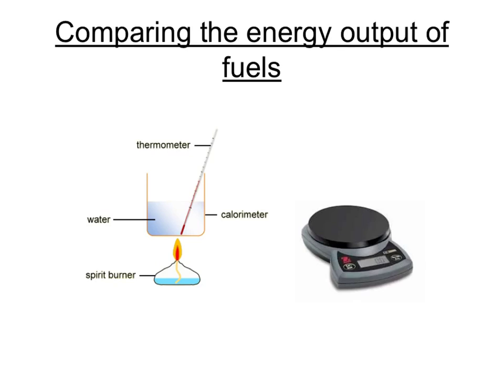You would measure the temperature of the water before and after the experiment. You would use a fixed volume or mass of water within the calorimeter and you would weigh the spirit burner before and after burning. By using the mass of the water, the temperature rise of the water, and the specific heat capacity of the water, you can work out the energy transferred to the water. By knowing the mass of the fuel, you can then work out the energy transferred per gram of the fuel.